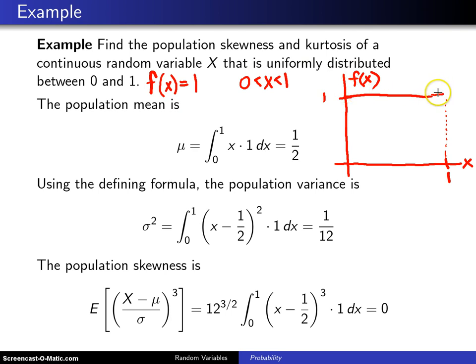Now that is a symmetric distribution about 1/2, and because of that you can tell that the population skewness has to be 0 by inspection. We're going to go ahead and proceed as if we don't know that, and we will get 0 for the skewness, but we will do it as if we did not know that was the case.